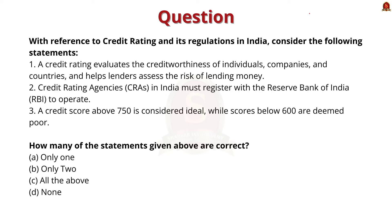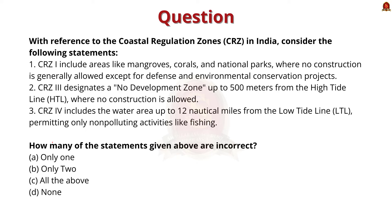Now let us move on to the preliminary practice question discussion. Look at this question about credit rating and its regulation in India. Three statements are given: the first says credit rating evaluates creditworthiness of individuals, companies, and countries, and helps lenders assess the risk of lending — this is correct. The second says CRAs in India must register with RBI to operate — this is incorrect, as they must register with SEBI. The third says a credit score above 750 is ideal while below 600 is poor — this is correct. The answer is option B: only two.